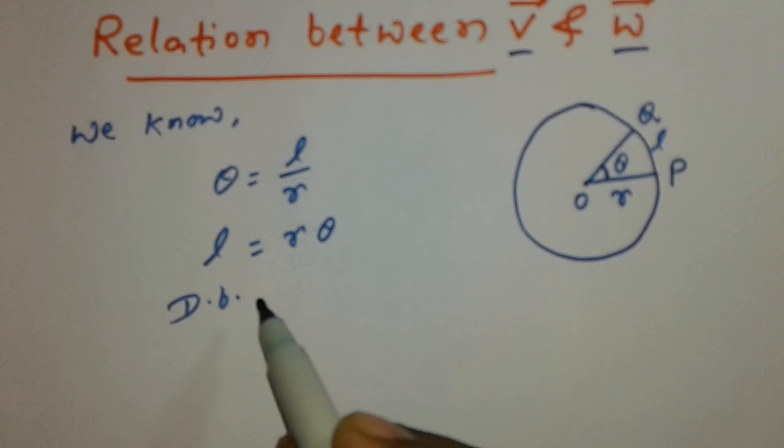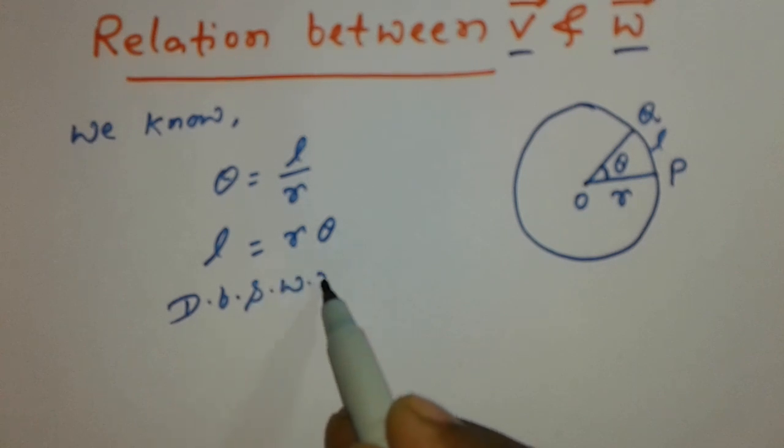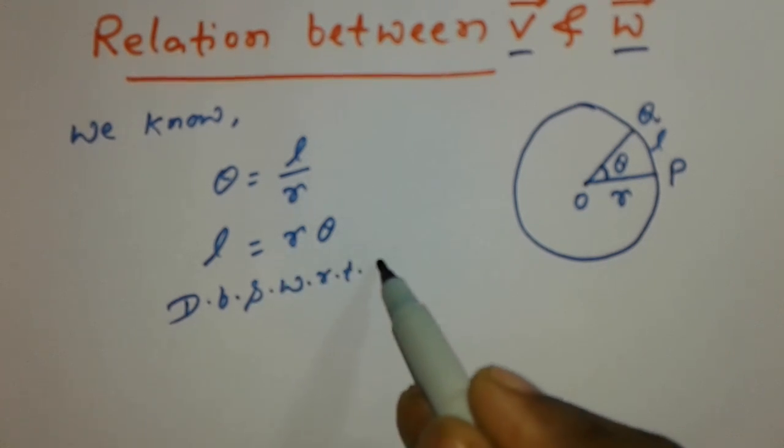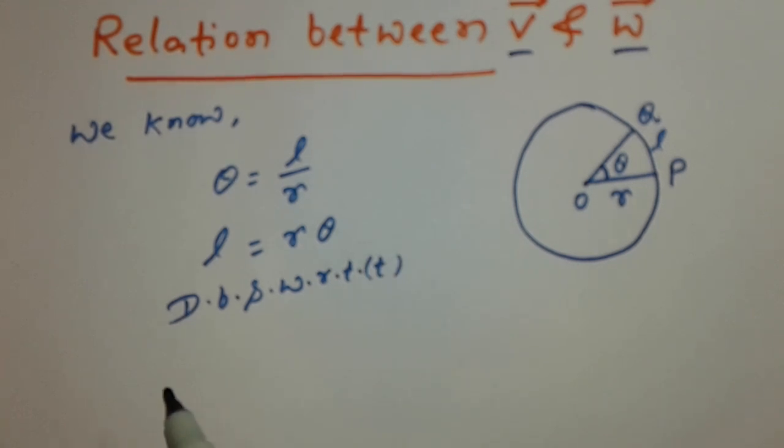Differentiate both sides with respect to time t. So we can write dL by dt is equal to R, R is a constant, and d theta by dt.